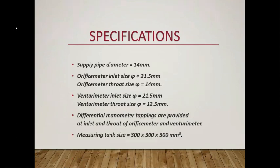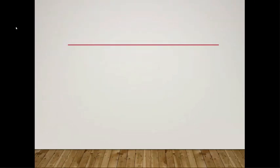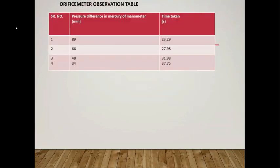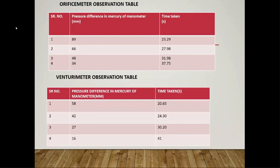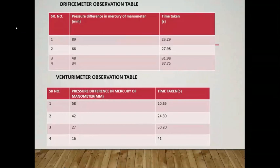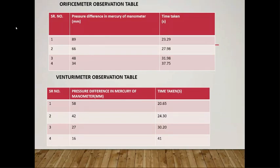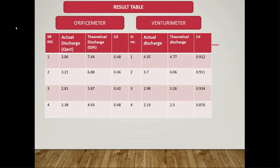The measuring tank volume is 300 mm³. An observation table has been made with columns for pressure difference in mercury (from the manometer) and time taken, for both the orifice meter and venturi meter. The formula for actual discharge is: Q_actual = volume collected / time taken. The formula for theoretical discharge is: Q_theoretical = (A1 × A2 × √(2gH)) / √(A1² − A2²). The coefficient of discharge is: Cd = Q_actual / Q_theoretical.